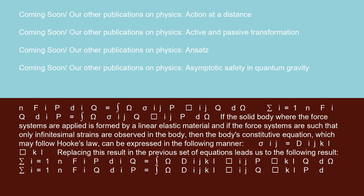Replacing this result in the previous set of equations leads us to the following result: Σ(i=1 to N) F_iP · D_iQ = ∫_Ω D_ijkl · ε_ijP · ε_klQ dΩ, and Σ(i=1 to N) F_iQ · D_iP = ∫_Ω D_ijkl · ε_ijQ · ε_klP dΩ.